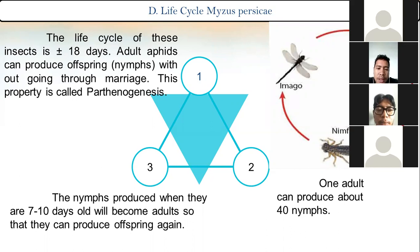Life cycle of Myzus persicae: Number one, the life cycle of this insect is 11 days. Adult aphids can produce offspring nymphs without mating — this property is called parthenogenesis. Number two, one adult can produce about 14 to 49 nymphs. Number three, the nymphs produced, when they are 7 to 10 days old, will all become adults, so they can produce offspring again.